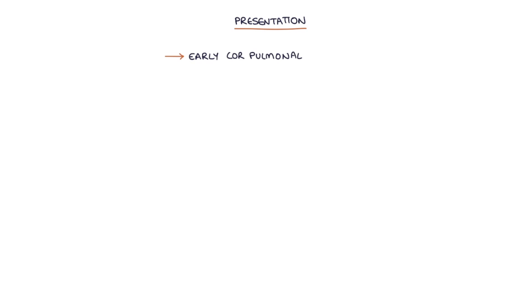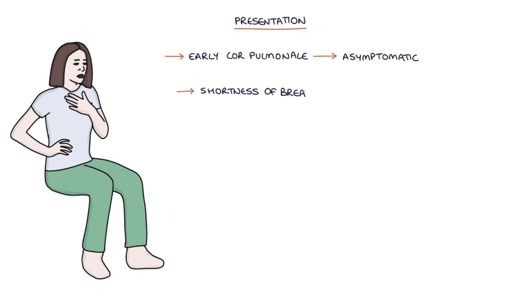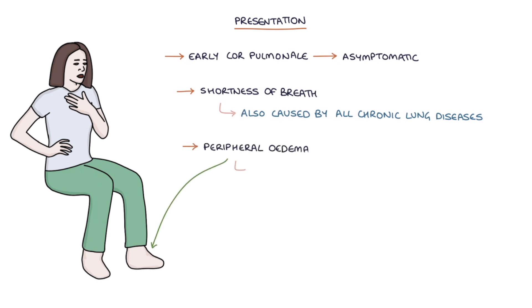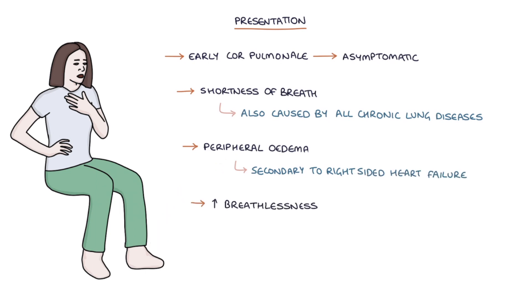How do patients present? Often patients with early cor pulmonale are asymptomatic. The main presenting complaint is shortness of breath, though this is also caused by the chronic lung diseases that lead to cor pulmonale. Patients may also present with peripheral edema, increased breathlessness on exertion, syncope — which is dizziness or fainting — or chest pain.